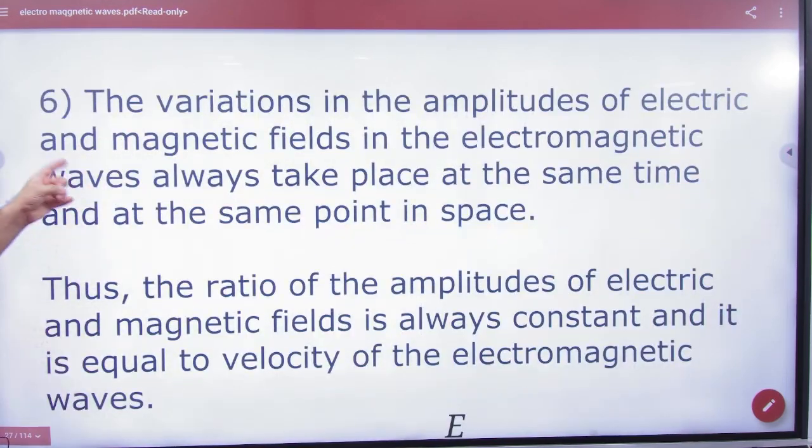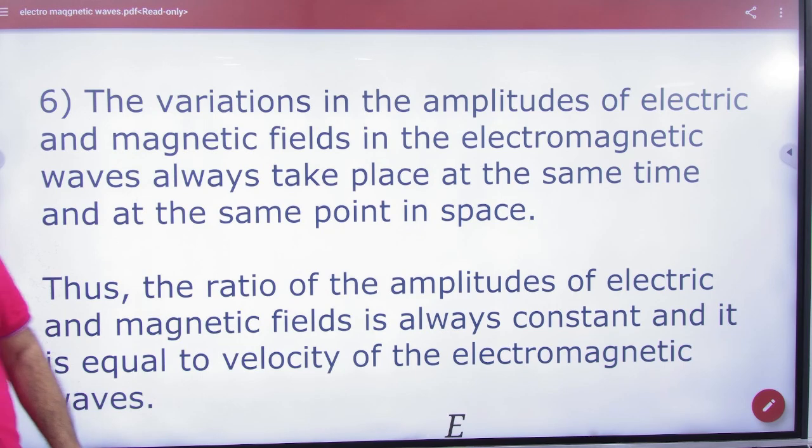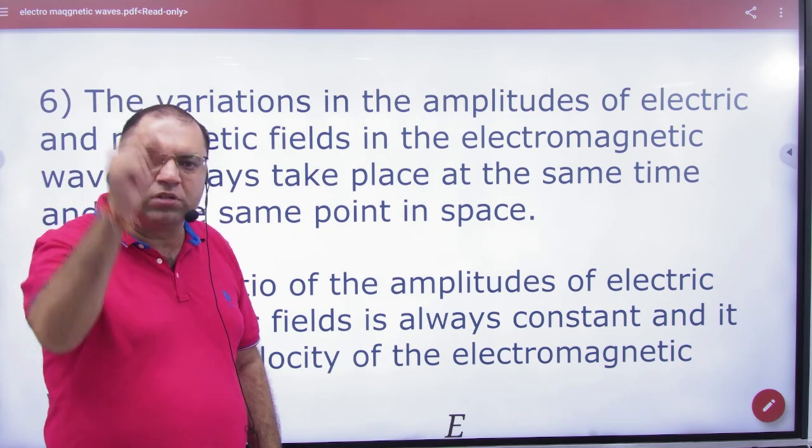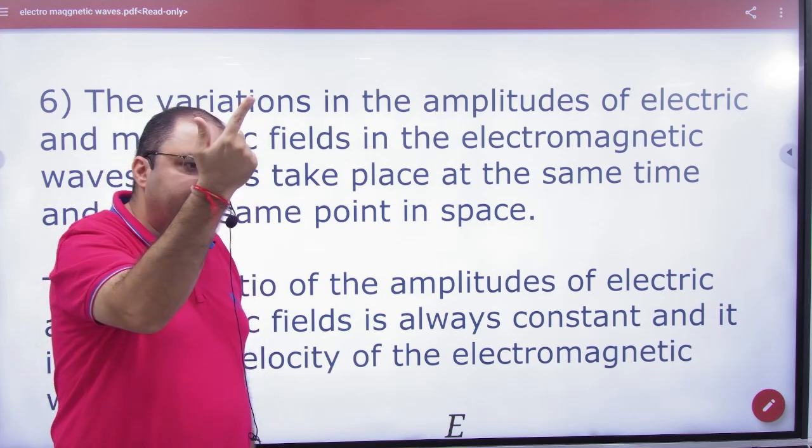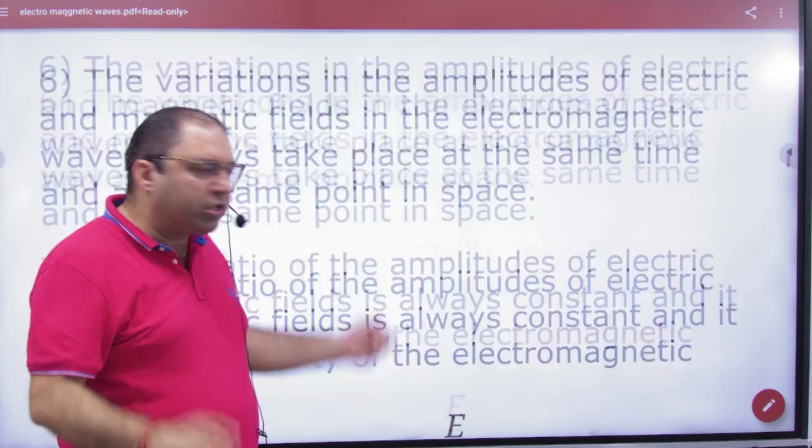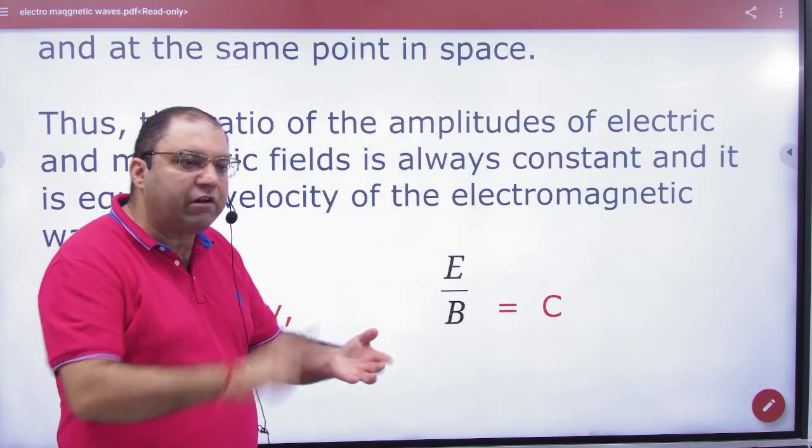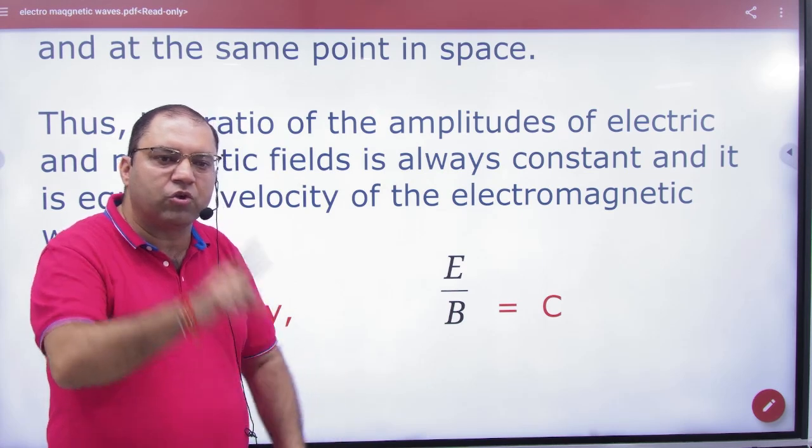Variation in the amplitude of electric and magnetic field in EM waves always takes place at the same time, at the same point in space. This is what I just mentioned. This is the same point. If E changes at this moment, B will even change at this moment. This is the same way.